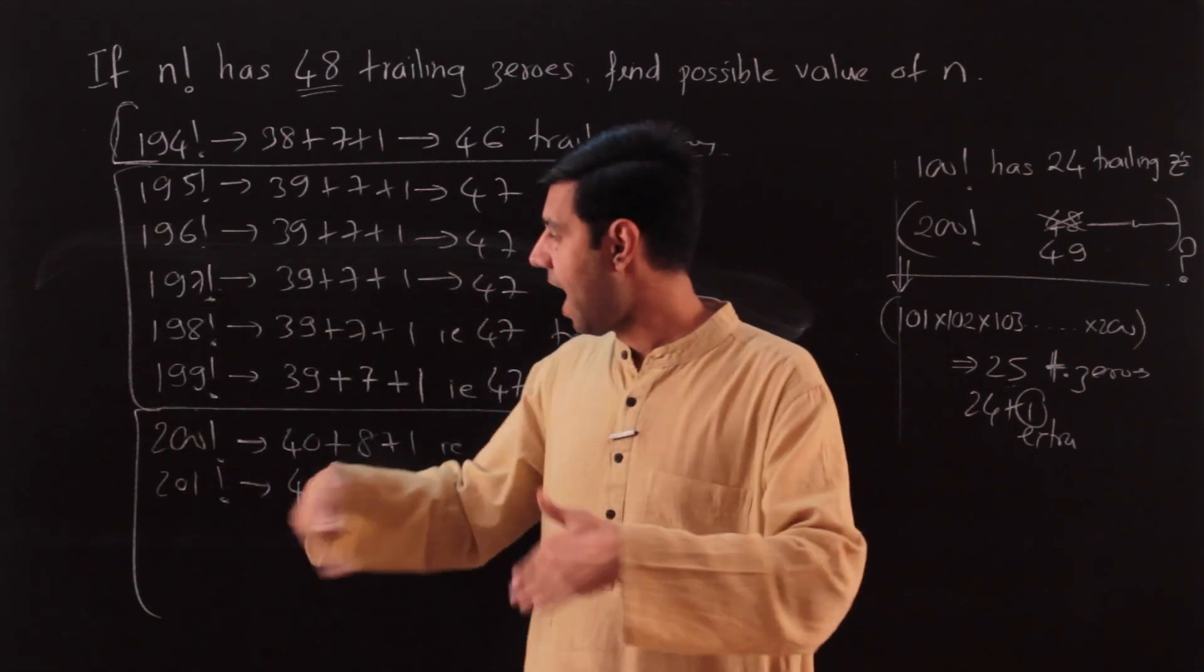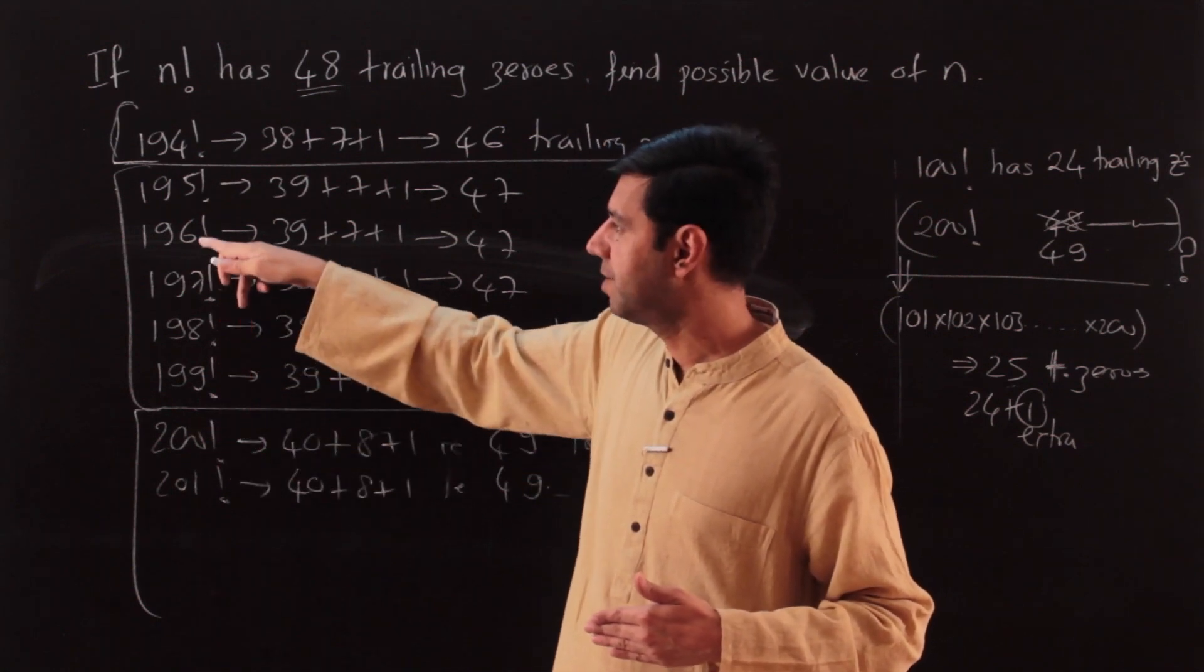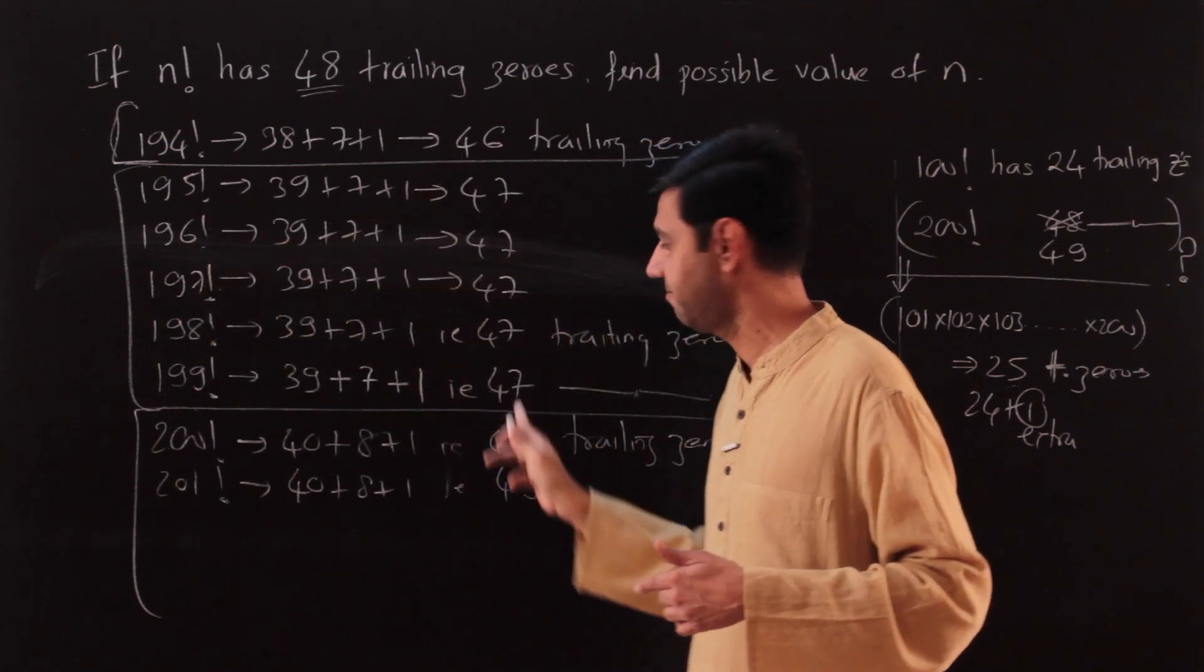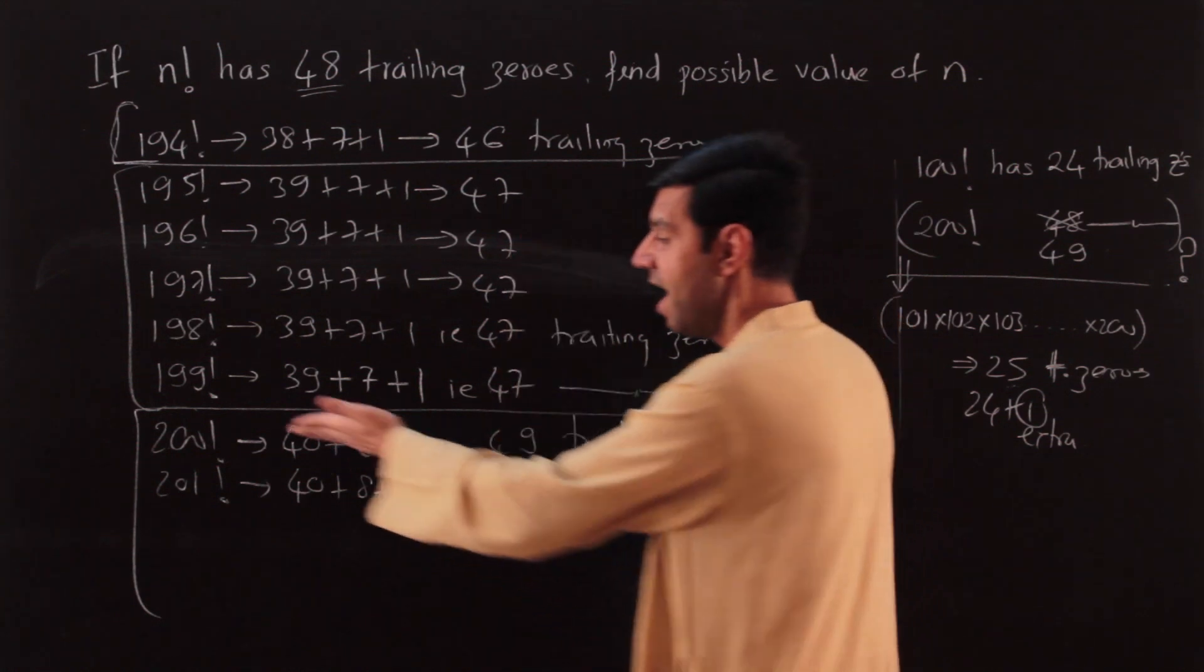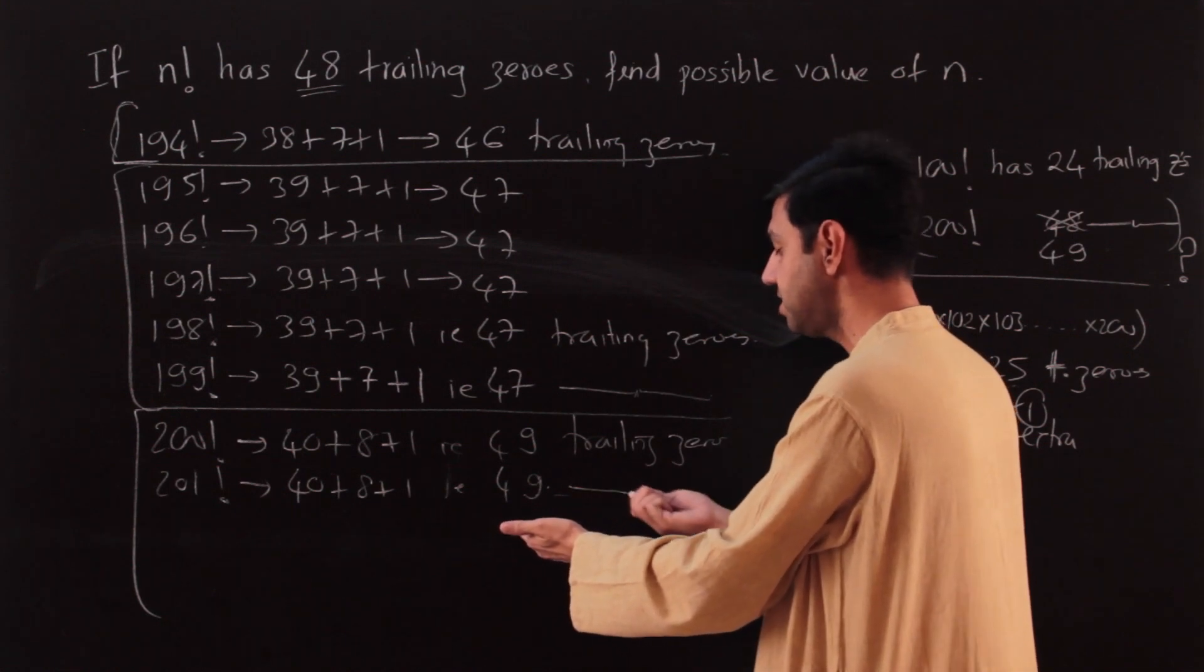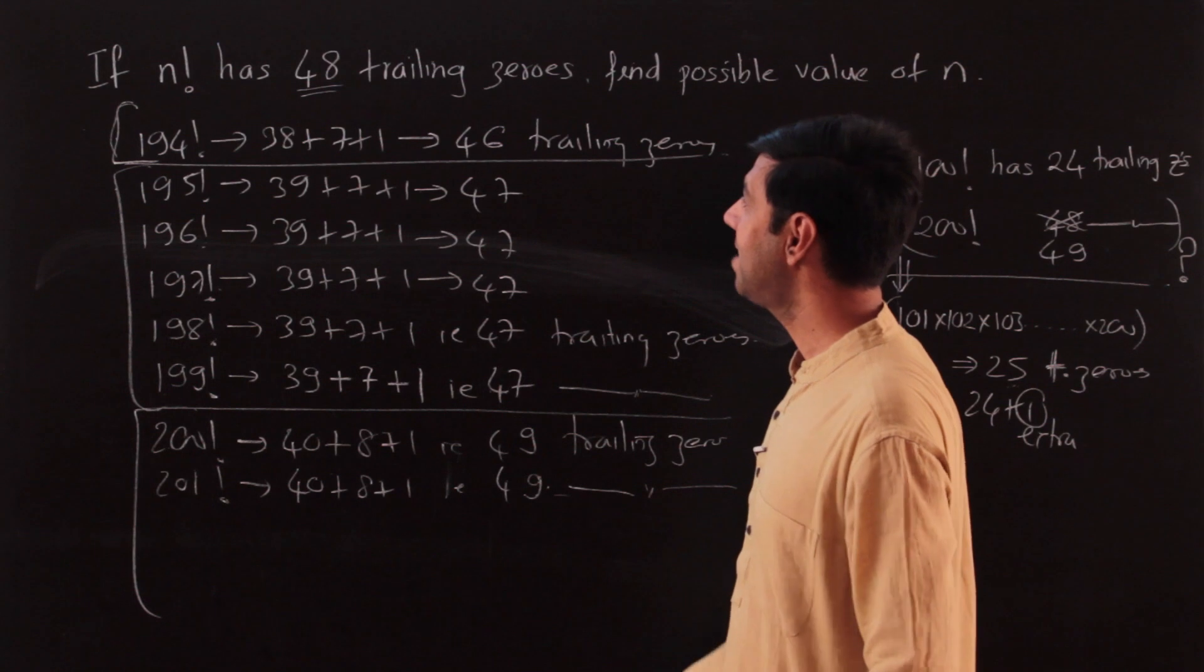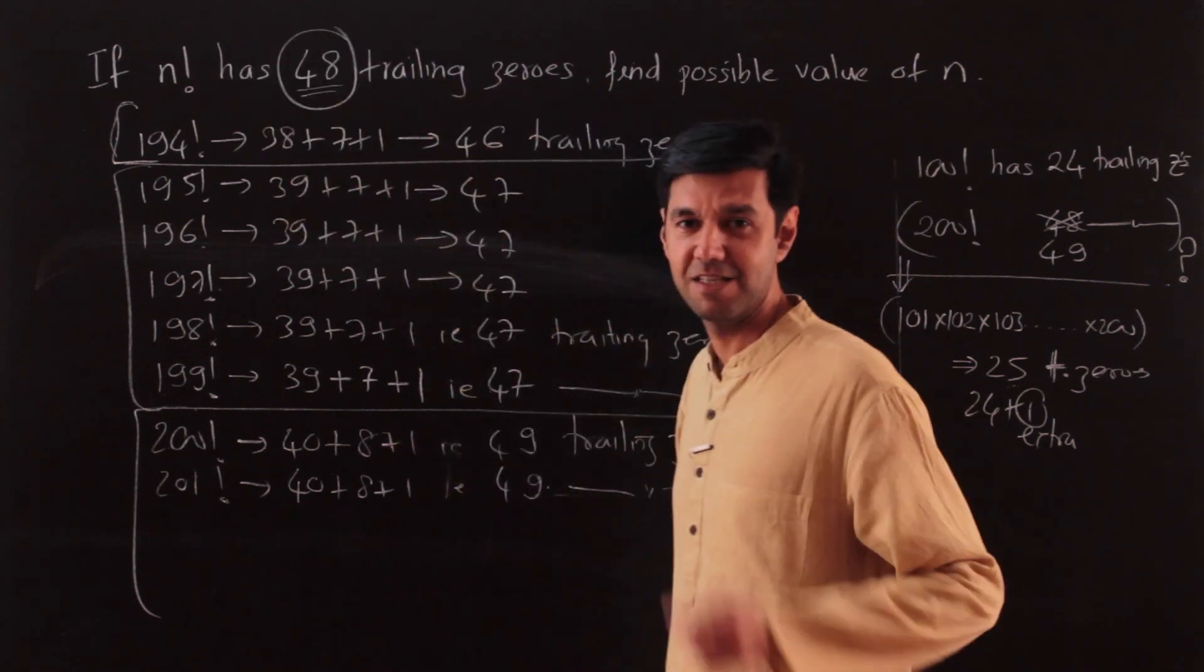We are looking at consecutive factorials. We are going higher. We started from 200, we went one number lower: 199, 198 factorial, and we observed a few observations. If I go from 200 factorial to the next, 201 factorial, the number of trailing zeros remains the same.